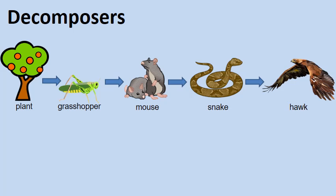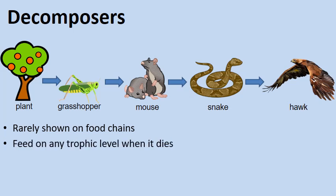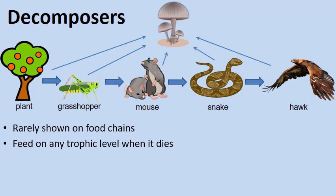Decomposers are rarely shown on a food chain. Adding a mushroom above the hawk could give the wrong impression that mushrooms hunt hawks — which is obviously not the case. The real reason decomposers aren't shown is because they feed on any trophic level when that organism dies. If we added decomposers, we'd need lines going from every organism to the decomposers, since when mice, grasshoppers, or any organism dies, their remains — and even their feces — are fed upon by decomposing bacteria and fungi.